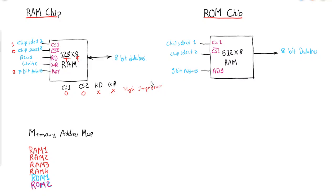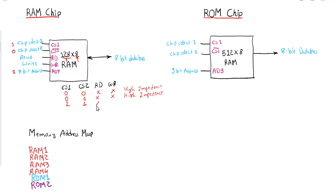Next, if CS1=0 and CS2=1, the chip is again in high impedance state. And if CS1=1 and CS2=1, then whatever the read/write input, it will again be in high impedance state.